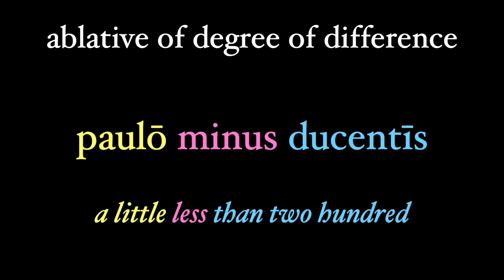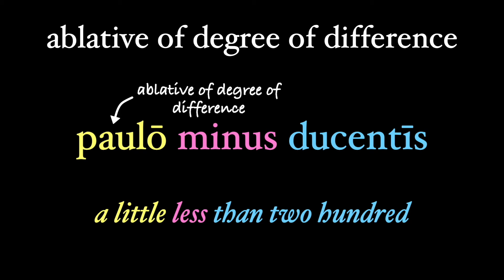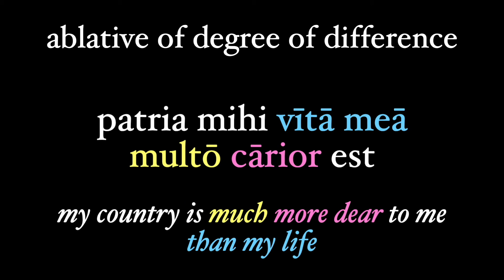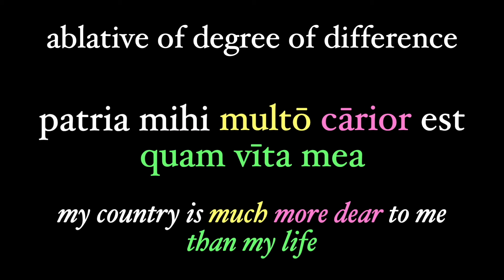We can use the ablative of degree of difference with the ablative of comparison too. Paulo minus ducentis — a little less than 200 — where Paulo is our ablative of degree of difference qualifying the minus, and ducentis is our ablative of comparison. And patria mihi vita mea multo carior est — my country is much more dear to me than my life — although we're more likely to see quam used here instead of the ablative: patria mihi multo carior est quam vita mea, meaning the same thing.